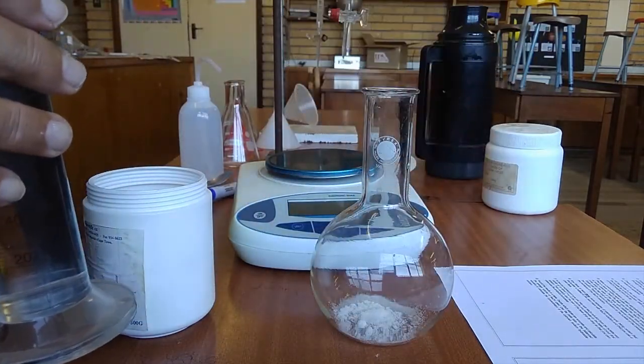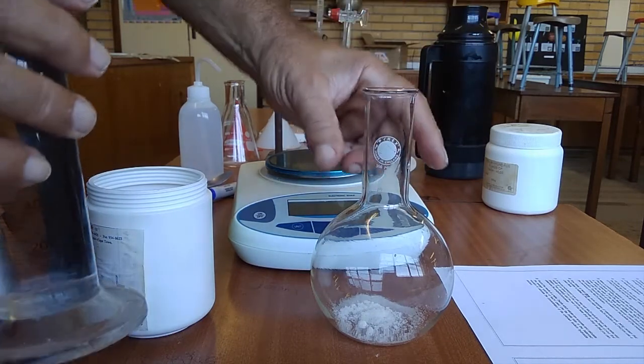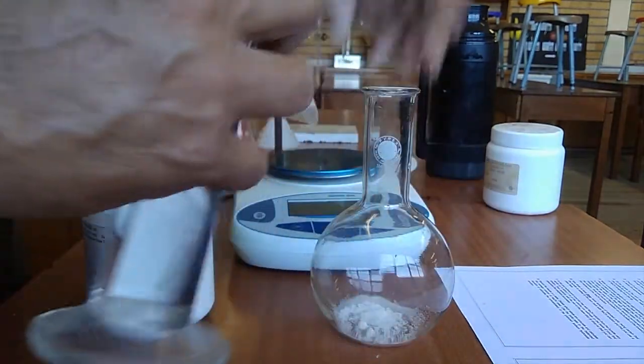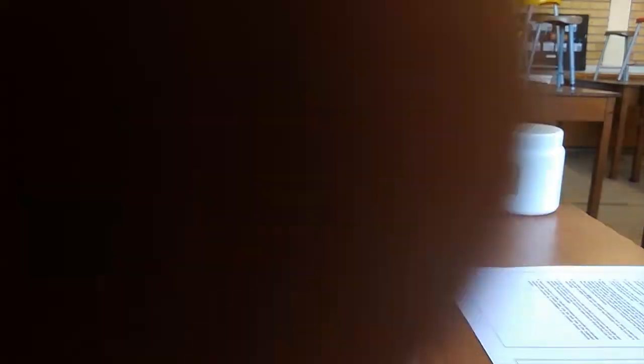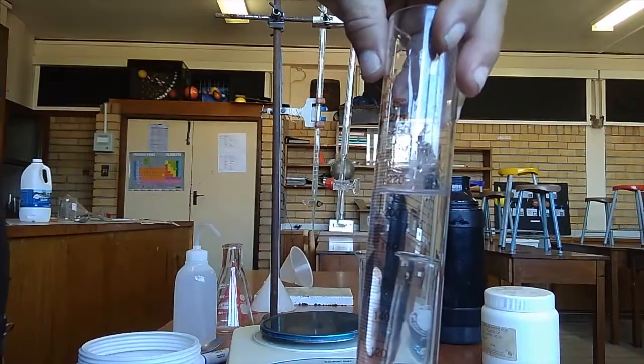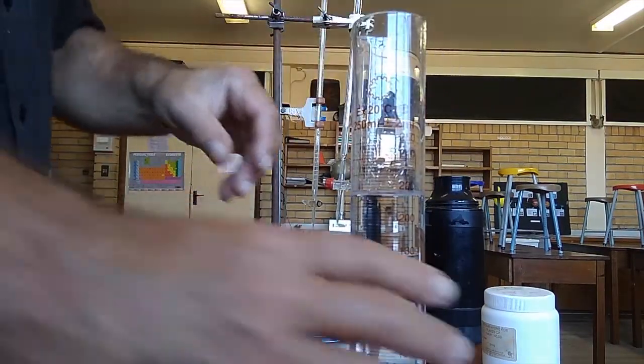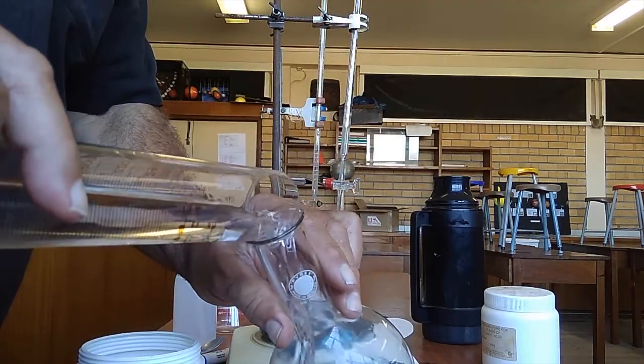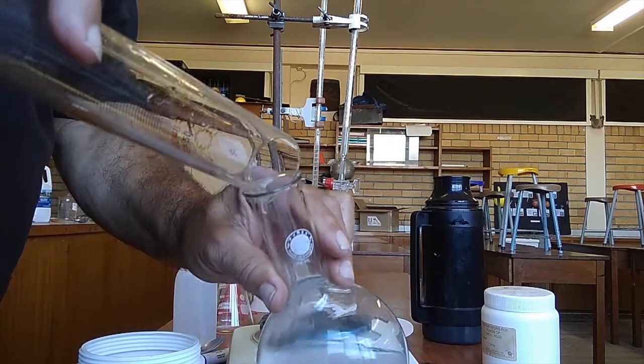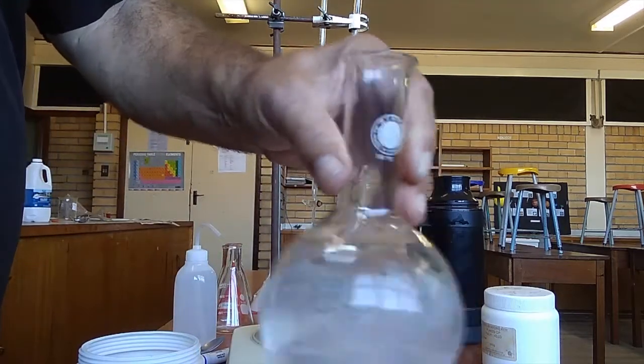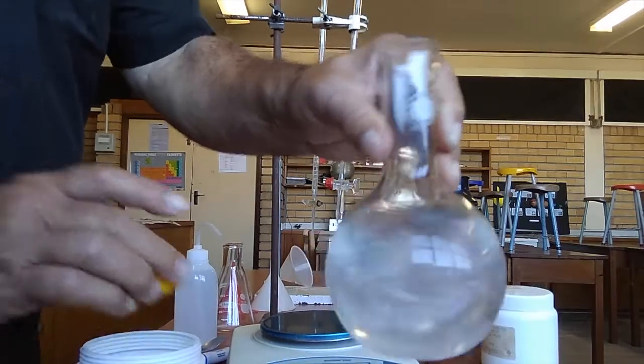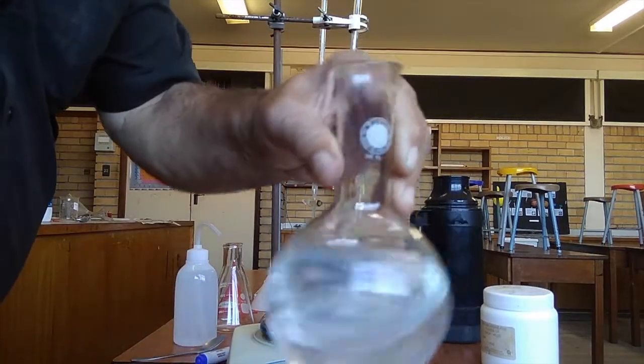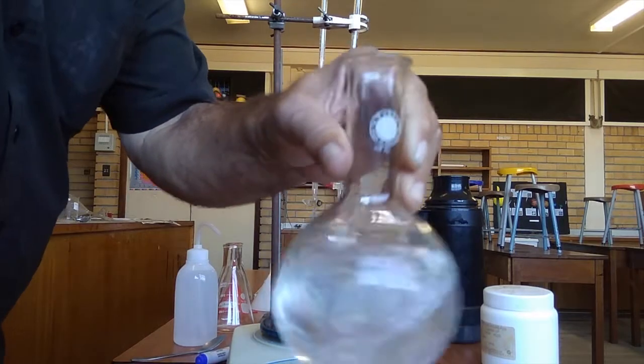Now I'm going to use a measuring cylinder. This measures up to 250 milliliters, so I need to throw in just less than 250 moles of water. We hope that the 6.34 grams of oxalic acid will dissolve.